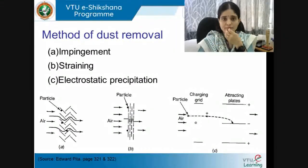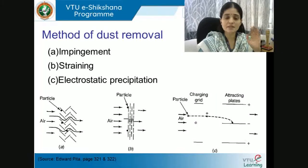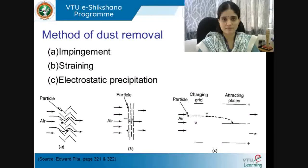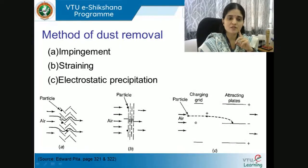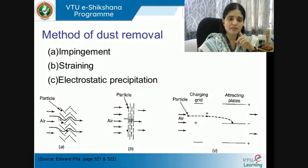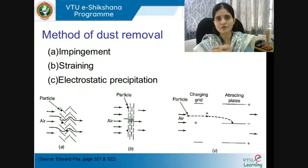Methods of dust removal — there are three types. First, the impingement method: dust particles get adhered and stuck to the filtering media. Second, straining: if the particle size is larger than the holes (interstices) in the filtering media, the dust particle gets strained there — similar to straining tea, where the powder remains on top and the liquid passes through.